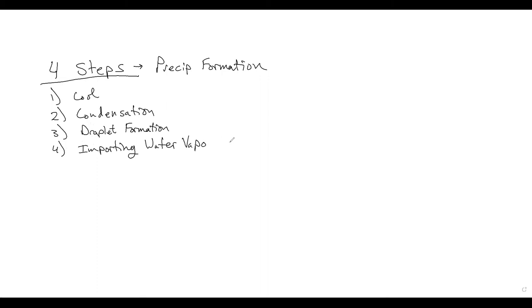The four steps: first we're going to cool. The second step is condensation. The third step is droplet formation. And then the fourth step is importing water vapor. Basically, once you get a storm cell formed, then for it to continue we need to import more water vapor from the surrounding environment.